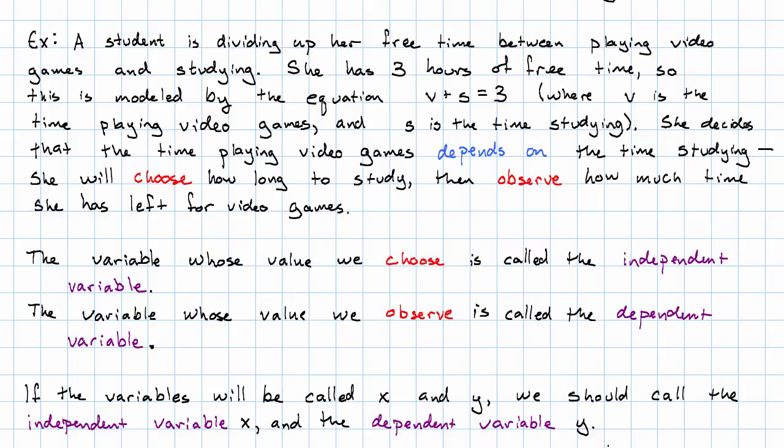One thing to keep in mind, if we're just calling our variables x and y, the one we call x should be the independent variable. And the one we call y should be the dependent variable. That's just the traditional arrangement of x and y. X is independent, y is dependent.